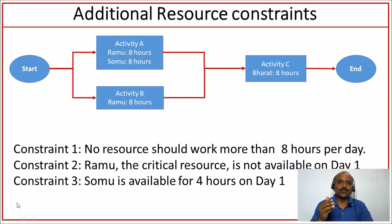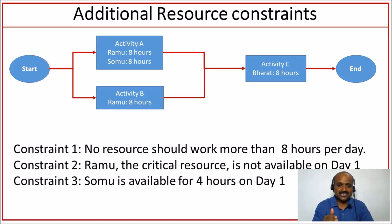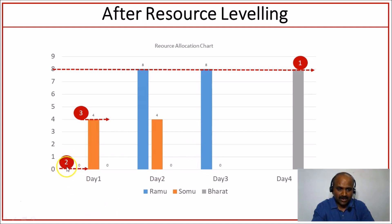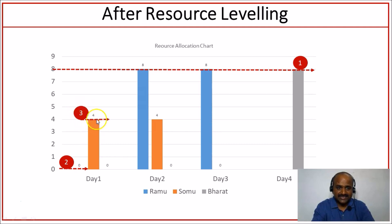What will happen if we have more resource constraints applied to our example? We already know constraint one states that no resource should work more than eight hours. Constraint 2 says Ramu, the critical resource, is not available on day one. Constraint 3 says Somu is available only for four hours on day one. Our resource graph now shows this: the dotted line indicates no resource should work more than eight hours; there is no blue bar for Ramu because he is not available; and the orange bar for Somu shows only four hours.